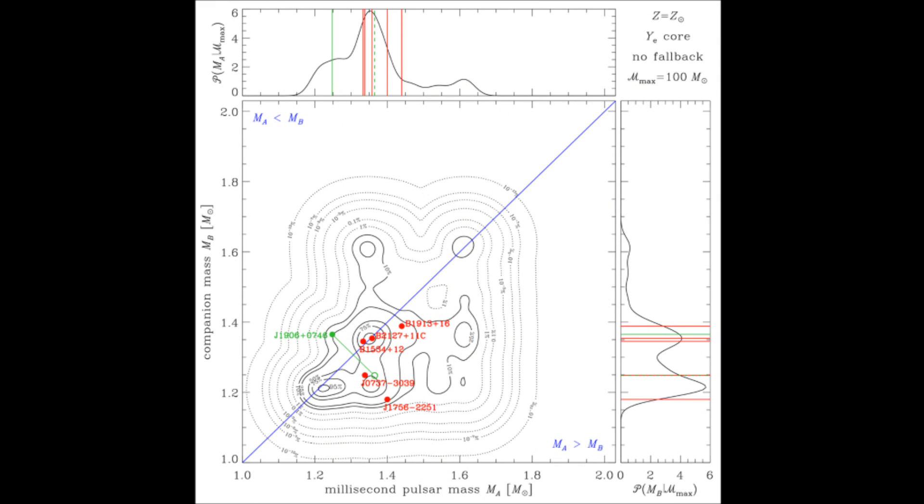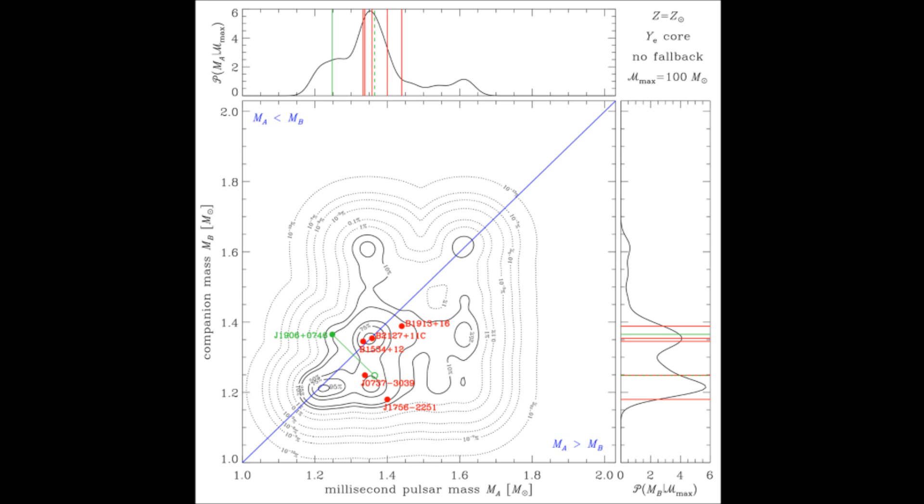Here we show the expected mass distribution of the two components. The recycled pulsar originated from the primary star and has mass mA, while the companion has mass mB. In this model, the stars in the original binary were assumed to have a uniform mass ratio, solar metallicity and no fallback. By comparing these theoretical probability contours to the observed data shown with filled circles, we can evaluate the relative probability of the different models.